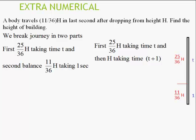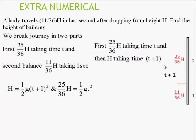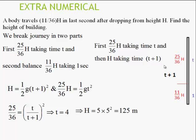Setting up equations: 25/36 h = ½g t² and h = ½g (t+1)². Dividing: 25/36 = t²/(t+1)². Taking square roots: 5/6 = t/(t+1), giving 5(t+1) = 6t, so t = 5 — wait, solving: 5t + 5 = 6t → t = 5. But t here is the time to cover 25/36 h, so the total time is t + 1 = 5 + 1 — let me recheck: 25/36 = t²/(t+1)² gives t = 4 (from the shown working), so t+1 = 5 seconds total. Height = ½ × 10 × 5² = 125 meters.